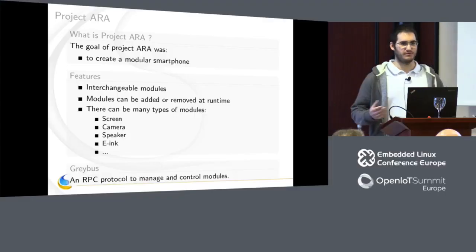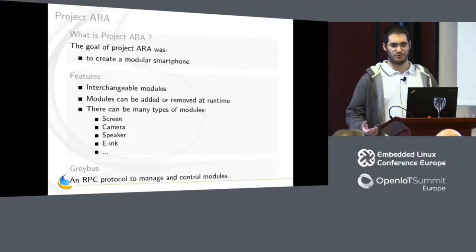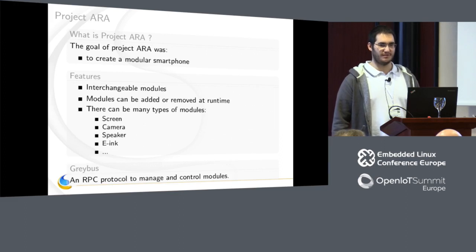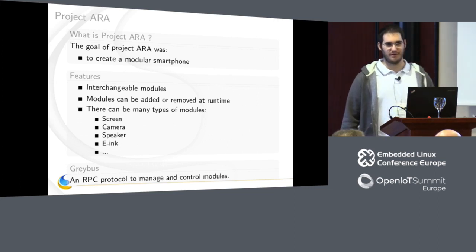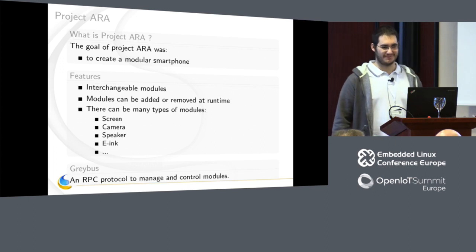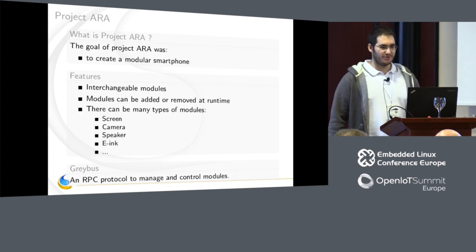Everything begins with Project Ara. The goal of Project Ara was to create a modular phone with interchangeable modules that could be added or removed at runtime without switching off the phone. The goal was to support any type of module, such as the screen, camera — even the CPU was supposed to be a module at the beginning. To make that work, we had to develop a new protocol: Greybus.